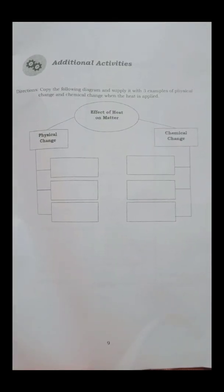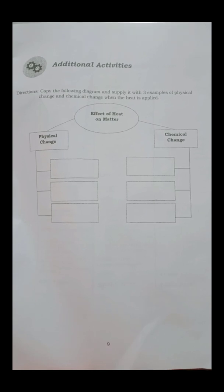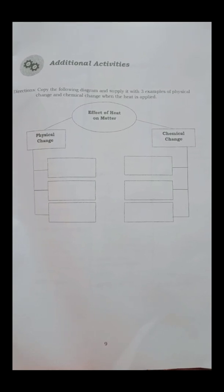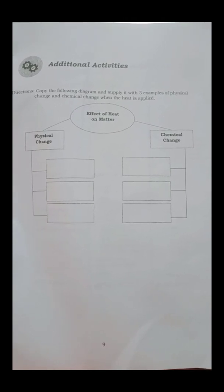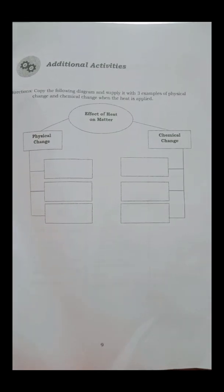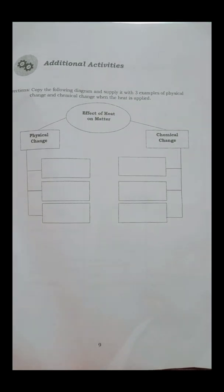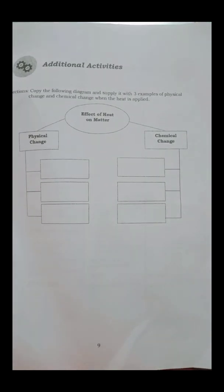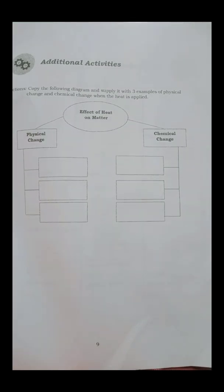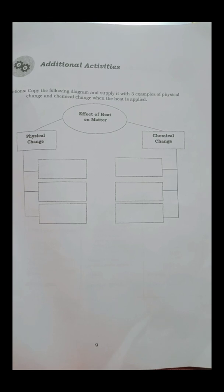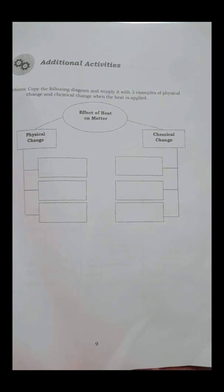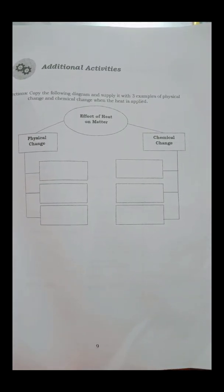Number 9: A spoon of white sugar was heated over a stove for 3 to 5 minutes. The result was the white sugar turned into brown and black. Burnt sugar is an example of chemical change or physical change. Number 10: A chocolate bar was left on a warm room for a day and melted. It is an example of chemical change or physical change. For our additional activities: copy the following diagram and supply it with 3 examples of physical change and chemical change when heat is applied. So you can see the effect of heat on matter — there is a physical change and there is a chemical change. Give at least 3 examples. Thank you!